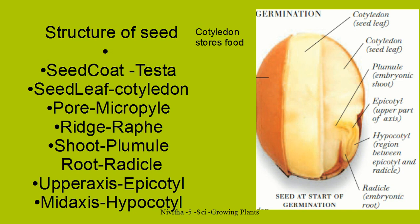The embryo is the part due to which a seed is able to reproduce. Plumule is the portion from where the shoot comes. Radicle is the portion from where the root comes out. Cotyledon is the seed leaf which is the storehouse of food. The seed coat is called testa — testa protects the seed, cotyledon stores the food, plumule gives rise to the shoot, and radicle gives rise to the root.